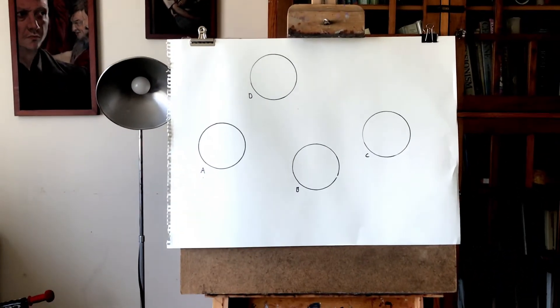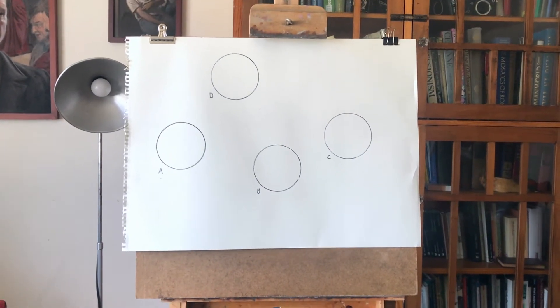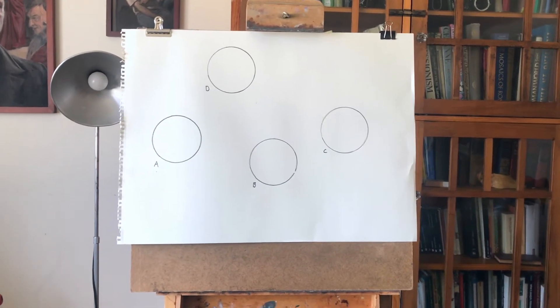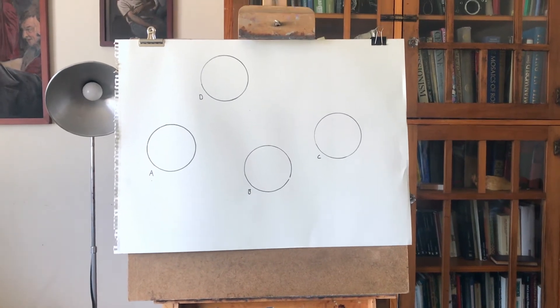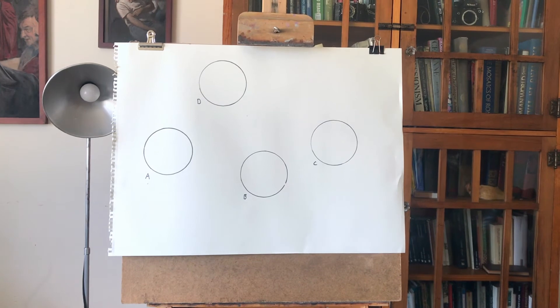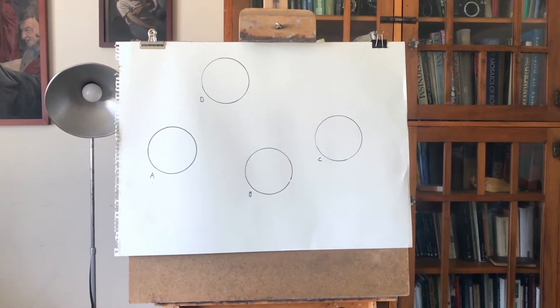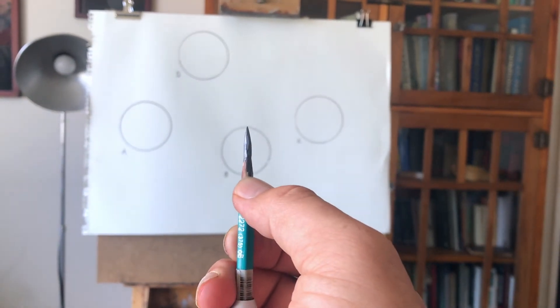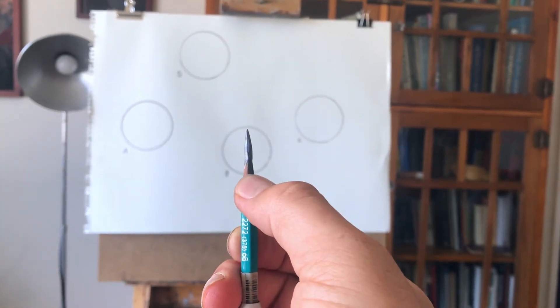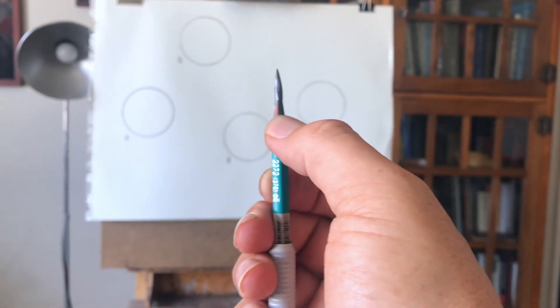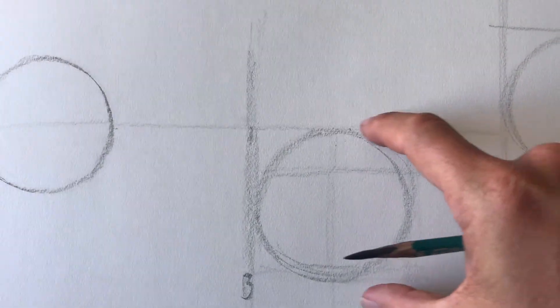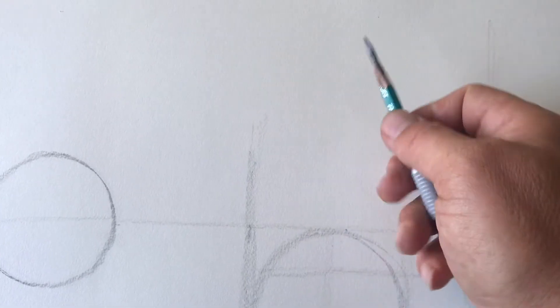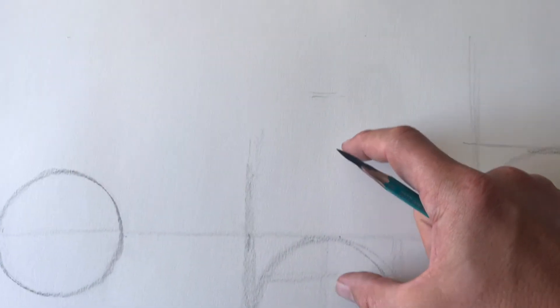Now that we've dealt with circle C, let's tackle circle D. Now that I have a number of things drawn, I have a number of different methods I can use to figure out the location of circle D — I can use circle A, or circle C, but I'm going to use circle B. The first thing I'm going to do is figure out the distance between circle D and circle B using my proportion measuring tool. My pencil is vertical: the tip goes to the top of circle B and my thumbnail slides to the bottom. Then I move up and notice that the distance between circle B and circle D is about one circle. I mark off that spot so these two distances are the same.